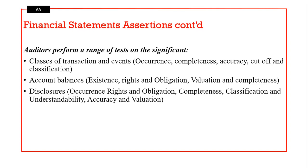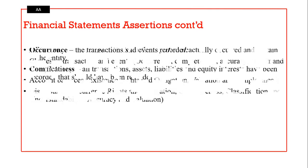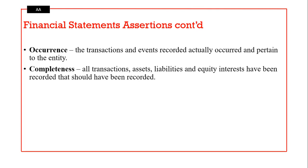There are three categories of financial statement assertions. These include: classes of transactions and events — items largely found in the statement of profit or loss; account balances — items largely found in the statement of financial position; and disclosures — referring to the notes to the financial statements.